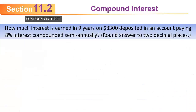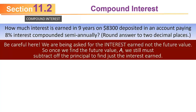How much interest is earned in nine years on $8,300 deposited in an account paying 8% interest compounded semiannually? Be careful — you're being asked for the interest earned, not the future value. The formula gives you capital A, the future value. But if you want the interest, you can still use the formula for A and then subtract the principal at the end before giving your final answer.